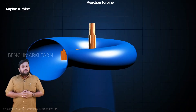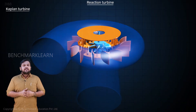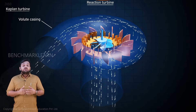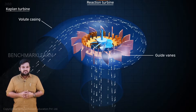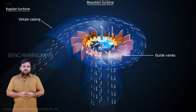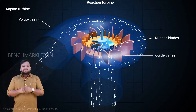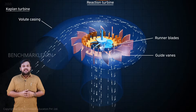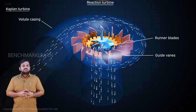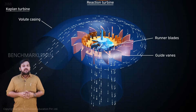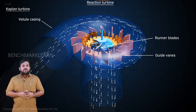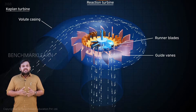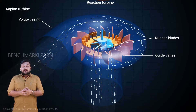Kaplan turbine. In the Kaplan turbine, water enters through the casing and flows through the guide blades. Water enters into the runner blade portion axially. The runner blades are designed in a specific aerofoil structure like in the Francis turbine, but the shape of the blade is a bit different — the blades are a bit lengthy and curved.